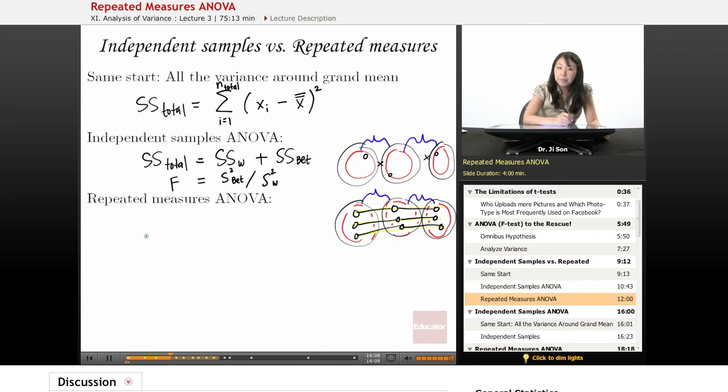So in repeated measures, the sum of squares total actually breaks down slightly differently. Even though it's still this idea of breaking down the sum of squares total, now it actually splits up into sum of squares subject, right? These individual links, that's the yellow part, plus the sum of squares within, just like before. Except now we call it residual.